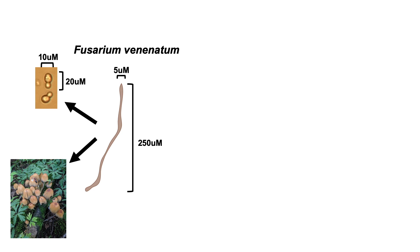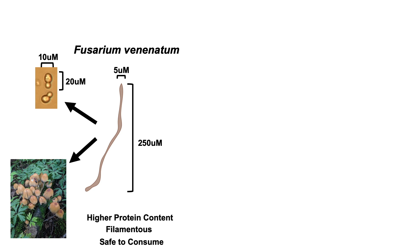Now what you might be thinking at this point is: if some mushrooms are edible and Saccharomyces cerevisiae is edible, what do we need fusarium for? Well, the answer is that fusarium has a higher protein content than most fungi. It is filamentous so it looks a little bit like a muscle fiber and it feels like you're eating meat. It's safe to consume after some years of research, so it's a really good candidate to make a meat substitute that is high in protein and tastes like real meat.